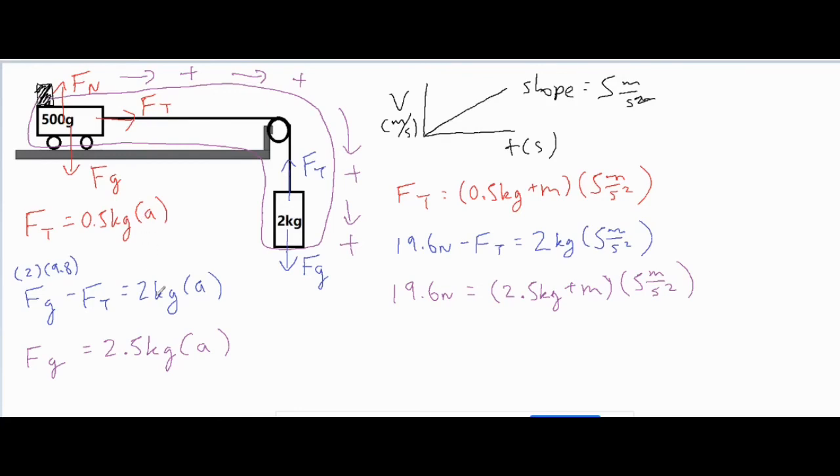So I rewrote my red, blue and purple formula. My red one was just rewritten to include the unknown mass that is stacked on top of the 0.5 kilogram cart. My blue formula stayed the same because it doesn't involve this cart. It only involves just the hanging mass.